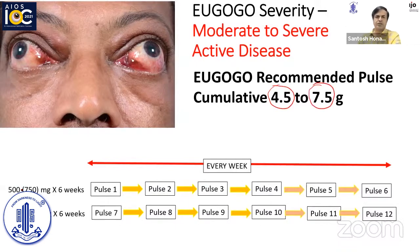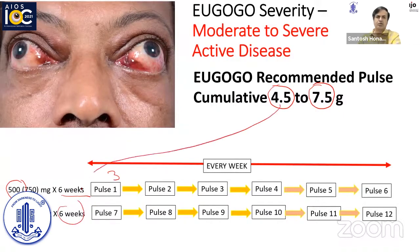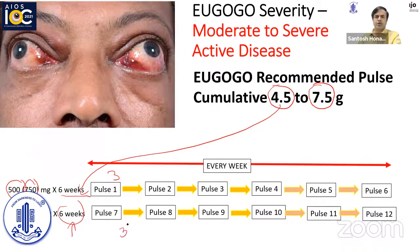If a patient has activity but not very severe, you start off on 500 milligrams every week for 6 weeks — that is 3 grams — followed by 250 milligrams every week for another 6 weeks, giving a cumulative dose of 4.5 grams. If it's more severe, you start with a higher dose of 750 milligrams for 6 weeks, followed by 500 milligrams for 6 weeks, giving a total treatment of about 3 months and a cumulative dose of 7.5 grams.